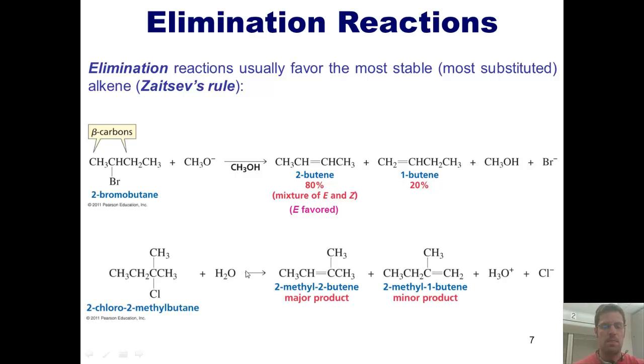Here's another example. You can imagine water acting like a base, and grabbing either the hydrogen to the right of this chlorine to form a carbon-carbon double bond out here, or the hydrogen to the left, forming a carbon-carbon double bond internally. While both products are indeed formed, the one that's the major product is the more substituted internal alkene, because it is the more substituted alkene, according to Zaitsef's rule.